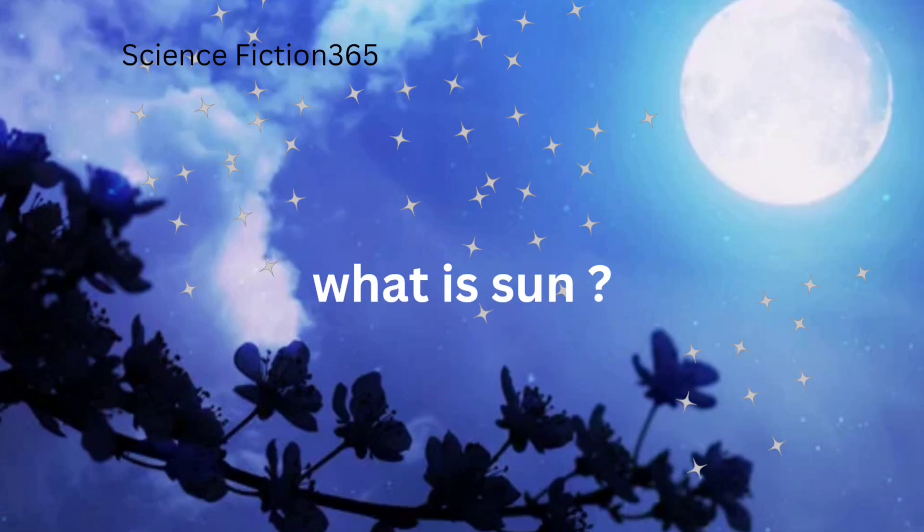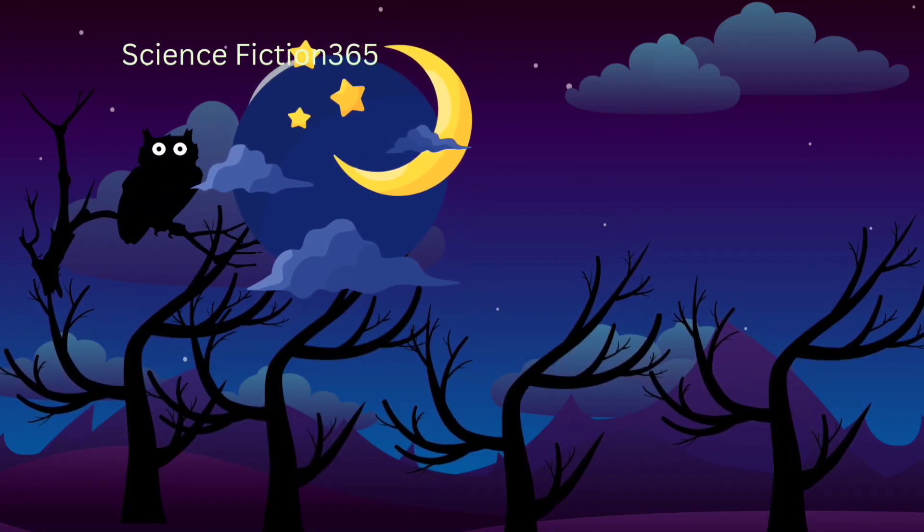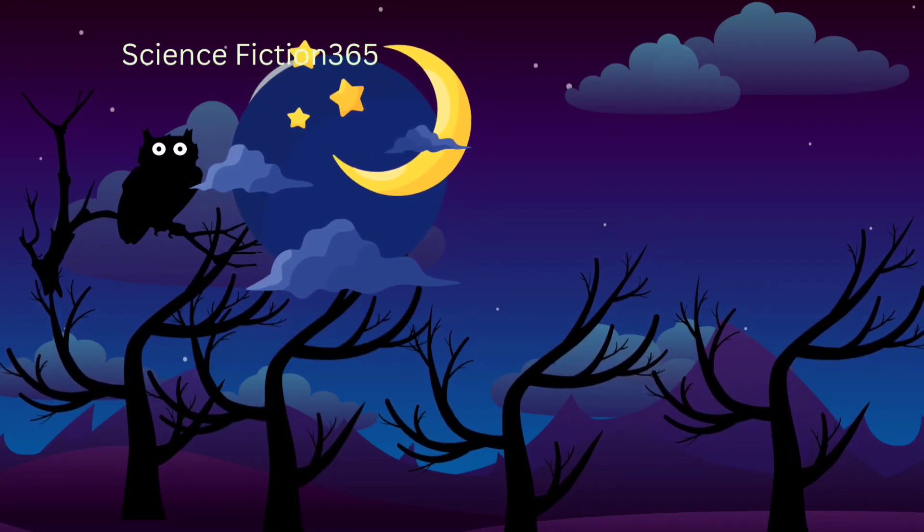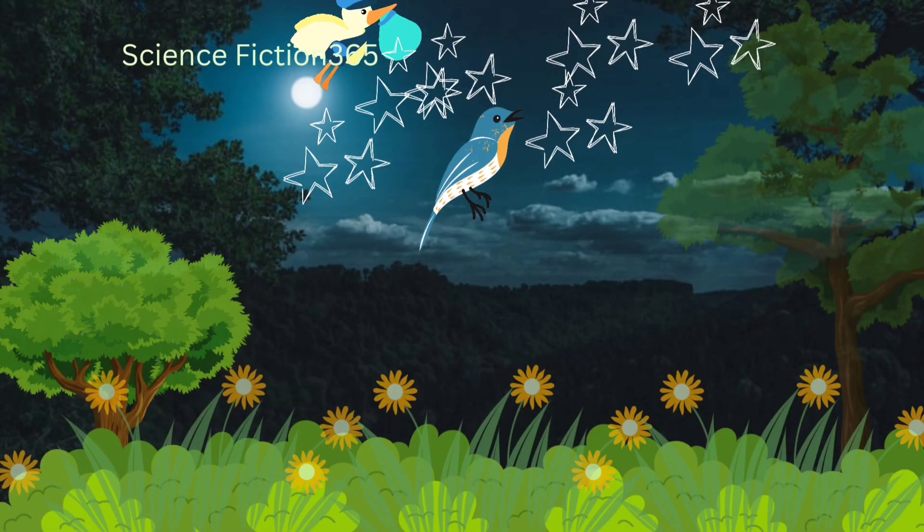Firstly, the sun is the primary source of light for our planet Earth. Without sun, our days will be dark and we will not be able to perform most of our daily activities.